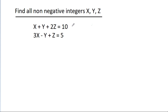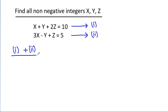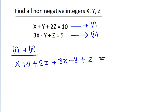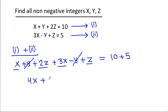Suppose this is equation 1 and this is equation 2. If we add equation 1 and equation 2, then it will be x plus y plus 2z plus 3x minus y plus z is equal to 10 plus 5. The y terms cancel, and x plus 3x is 4x, and 2z plus z is 3z, that is equal to 15.